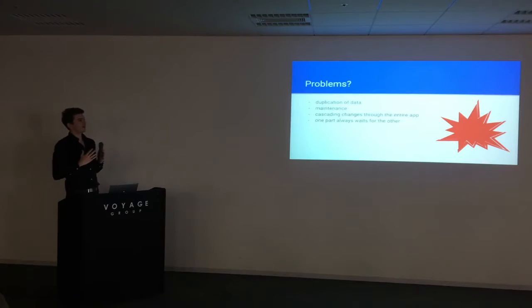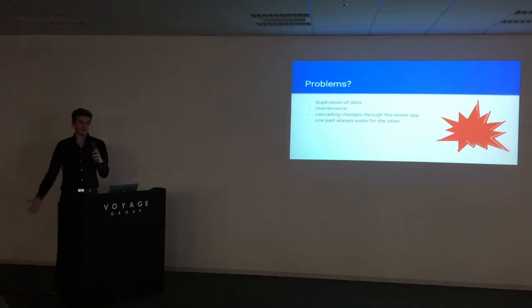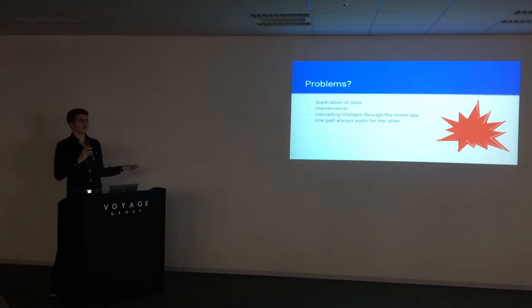So again, we have problems here. We have a lot of endpoints. We have a lot of duplicated data because all these endpoints contain mostly the same information — if we need the user object in every endpoint, then each of those endpoints contains that user information. We have high maintenance costs because whenever we change the schema for the user, we have to update all of our endpoints — it's a cascading change through the entire application. And again, like before, one part always waits for the other, even more so in this case.